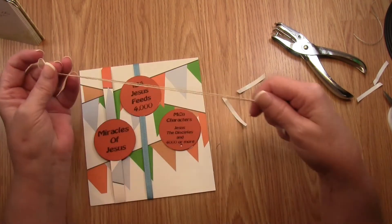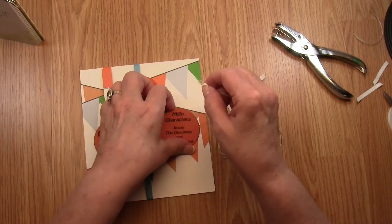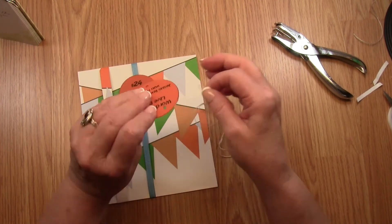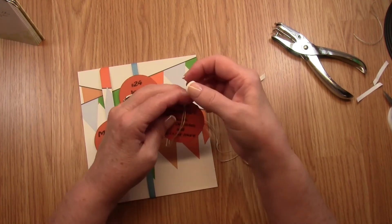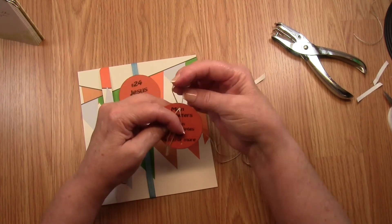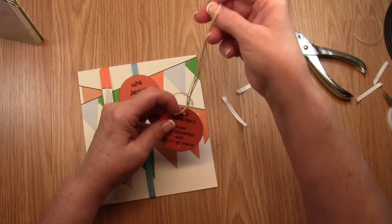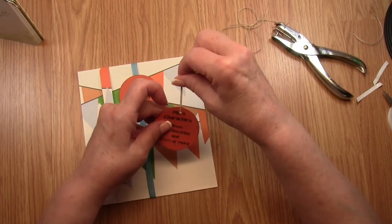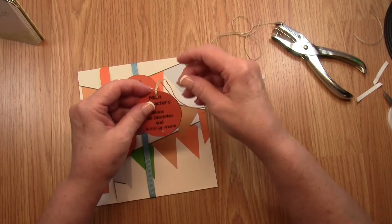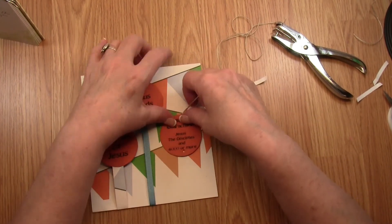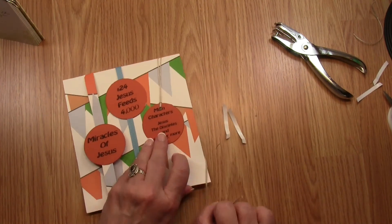So let's take our string, let's fold it in half, and take our two labels together. And going through the front of the labels, we're going to make a loop. Then we're going to take our loop and we're going to draw our tails and pull our tails through the loop, and this attaches it to the two circles.